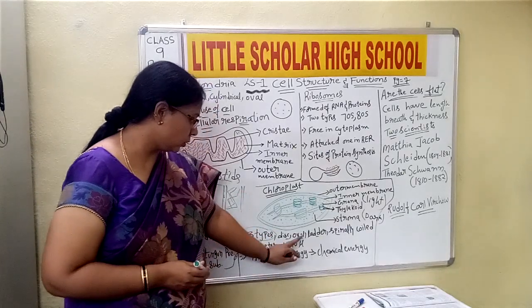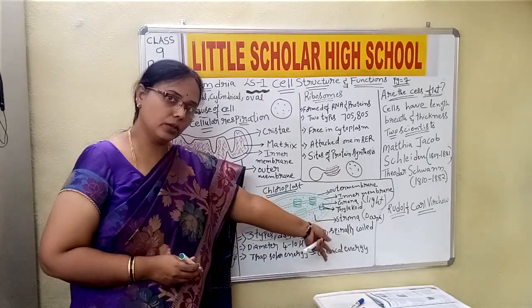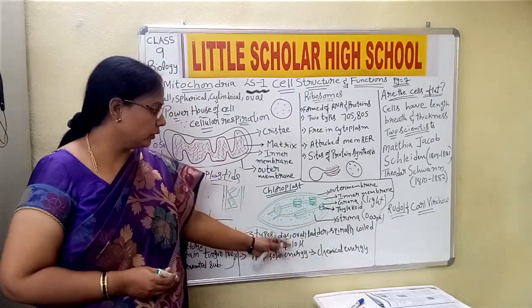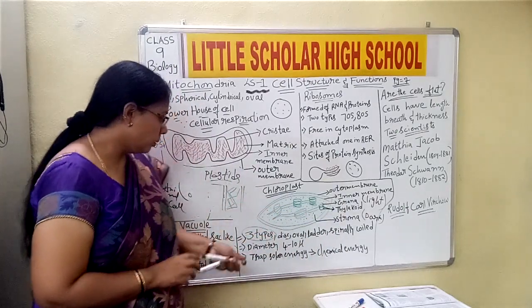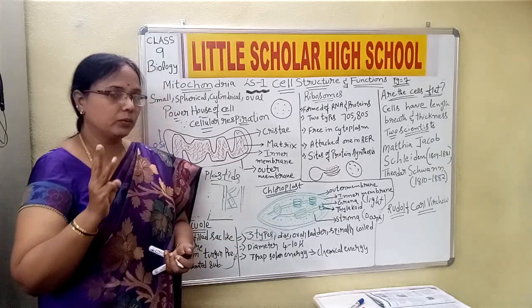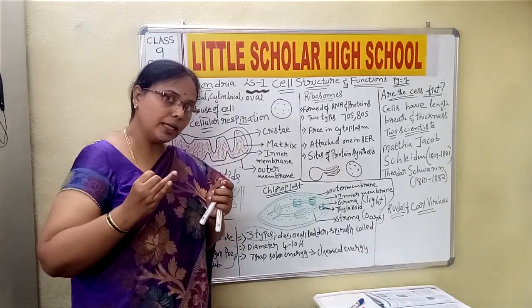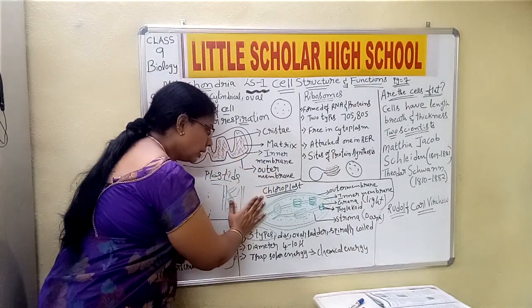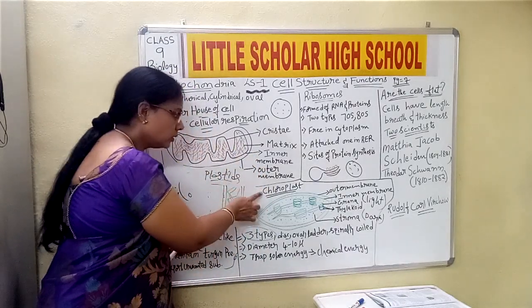The diameter of the chloroplast is four to ten microns, and it taps solar energy, converting it into chemical energy, which is the first step for photosynthesis. Now, chloroplasts are of three types. We actually consider chloroplasts under the plastids.